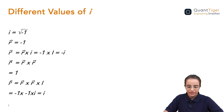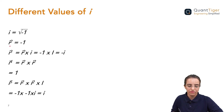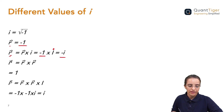Now let's see the different values of i. We know that i represents the square root of −1. i² = −1. i³ = i² × i = −1 × i = −i. i⁴ = i² × i² = (−1)(−1) = +1.